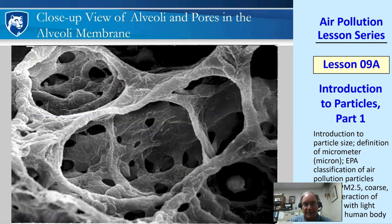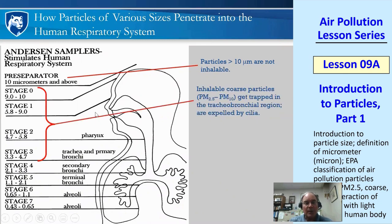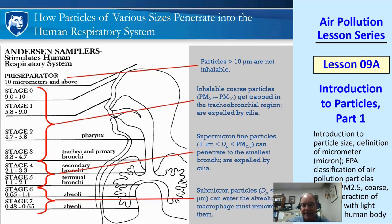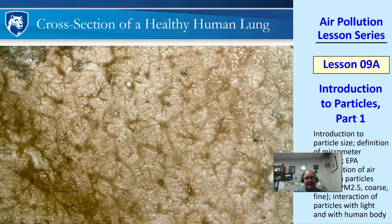Here's a summary of particle sizes and lung penetration: particles greater than 10 microns are not inhalable. Inhalable coarse particles between 2.5 and 10 microns get into the tracheobronchial region and are expelled by cilia. Supermicron fine particles between 1 and 2.5 microns can penetrate to the smallest bronchial tubes but are usually expelled by cilia. Submicron particles less than one micron can enter the alveoli, where macrophages handle removal. Even in a healthy lung, some particles can build up that neither cilia nor macrophages can remove — they stay in your body for life.